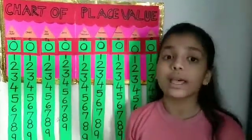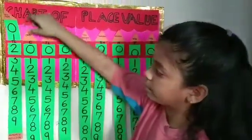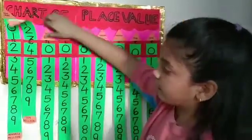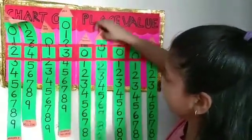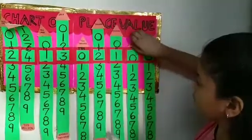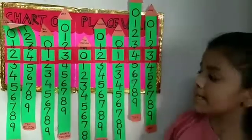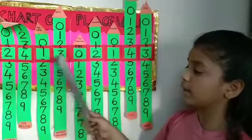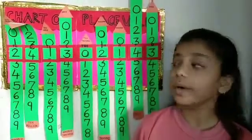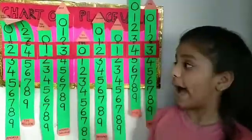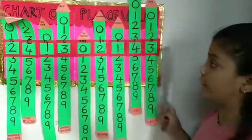Let's take some examples and find out about Indian place value and international place value. So the number is 2, 4, 1, 3, 0, 2, 1, 4, 3. So in the Indian place value system it is known as twenty four crore, thirteen lakhs, two thousand, one hundred forty three.